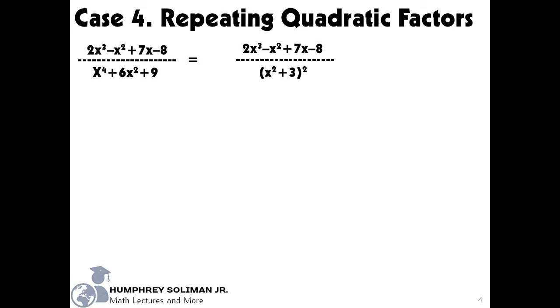Now that we have written our denominator in factored form, we can write a partial fraction for each factor. Since x squared plus 3 is a quadratic factor, we need to write its numerator as a first degree polynomial. This rule will always apply to quadratic factors in partial fraction decomposition. Since x squared plus 3 is a repeating quadratic factor, we need to write the exponent 2 for the second partial fraction. This rule will always apply to repeating quadratic factors.